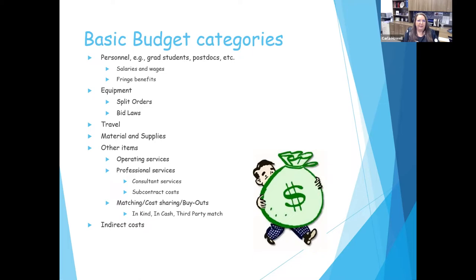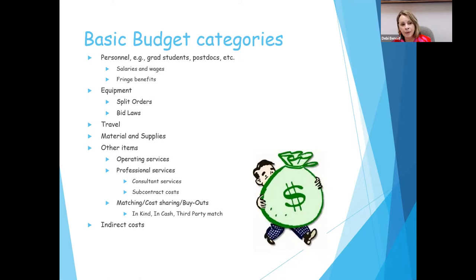On the front end, set it up right, find out what you need to know. Using the correct fringe benefits rate is important. Most of us have that posted on our sites. We have split orders to be aware of — you can't circumvent these laws and rules. You can't order $3,000 from one vendor and $2,000 from another; that's called a split order. You have to put it all together.